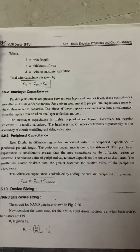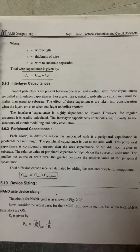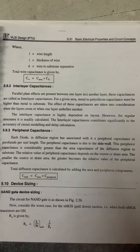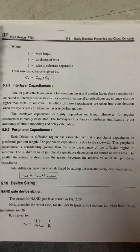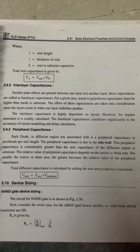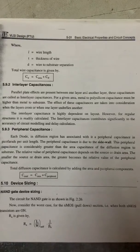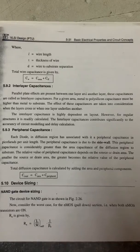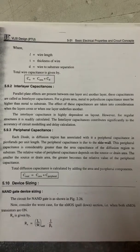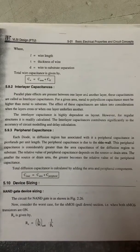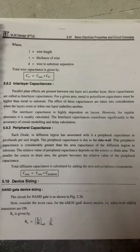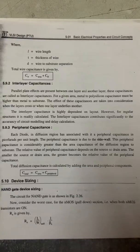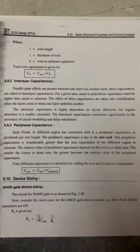The second source is interlayer capacitance. Parallel plate effects are present between one layer and another, and these are called interlayer capacitances. For a given area, metal-to-polysilicon capacitance must be higher than metal-to-substrate. These capacitances are taken into consideration when layers cross or when one layer underlies another. Interlayer capacitance is highly dependent on layout, but for regular structures it is readily calculated. It contributes to the accuracy of signal mode circuit modeling.